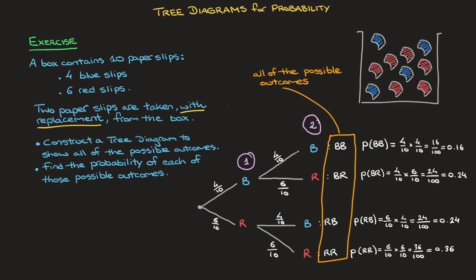But what if we were asked the probability of picking exactly one blue slip? In that case, there are two outcomes that have exactly one blue paper slip: blue followed by red, as well as red followed by blue. Both have the same probability of 0.24 — but which one do we choose? We'll learn how to answer that type of question in the next tutorial. For now, you should have a far better idea of how to construct a tree diagram, list all possible outcomes, and calculate the probability of each. That's it for this tutorial.